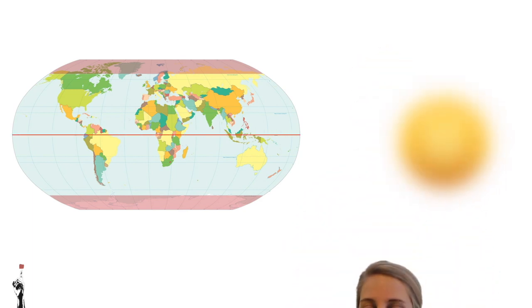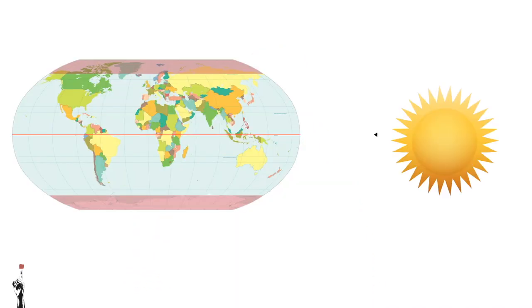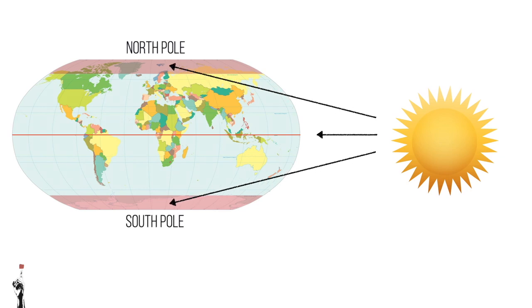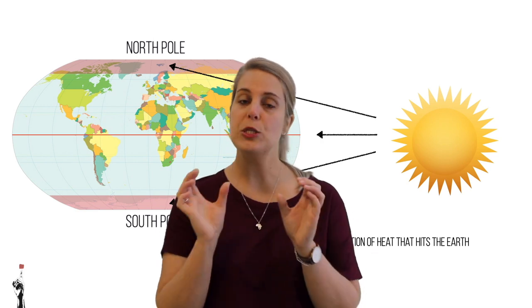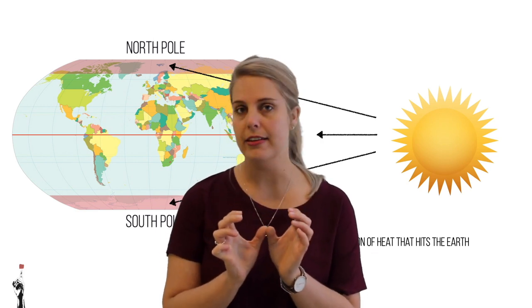Along the equator, the sun's rays mainly strike directly overhead — they strike the equator at 90 degrees. Because the rays are striking at 90 degrees they have a very short distance to travel compared to if they were traveling to the north or south pole. Because of this short distance, there is a strong concentration of heat that hits the earth, concentrated in a small area, and not much of the heat has been filtered or lost.